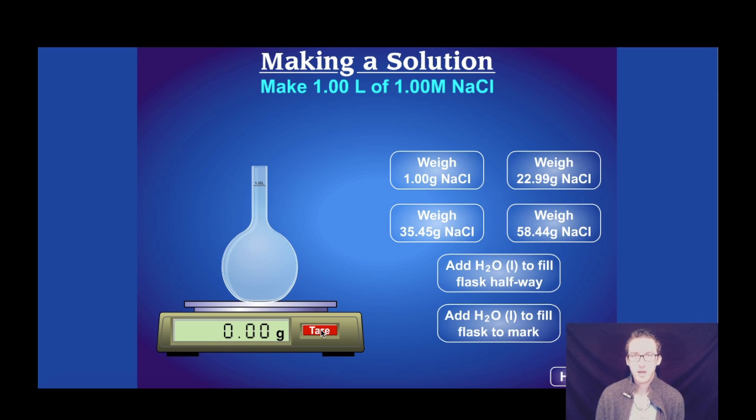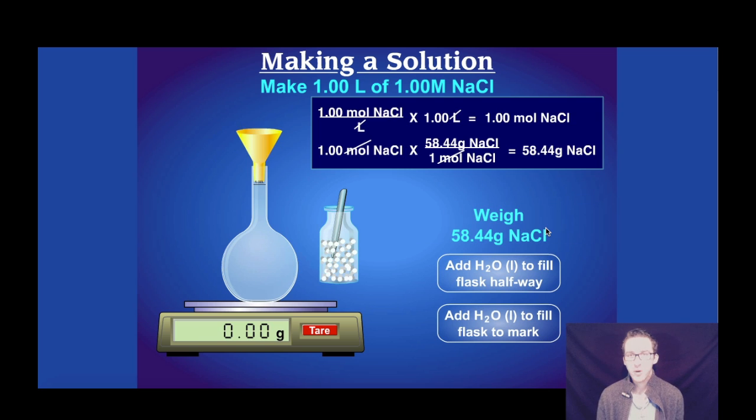And because I want a one molar solution of sodium chloride, I need one mole of sodium chloride. How do we know what the mass of one mole of sodium chloride is? We have to go to our periodic table. So we're going to mass out 58.44 grams of sodium chloride, which is the mass of one mole of sodium chloride.